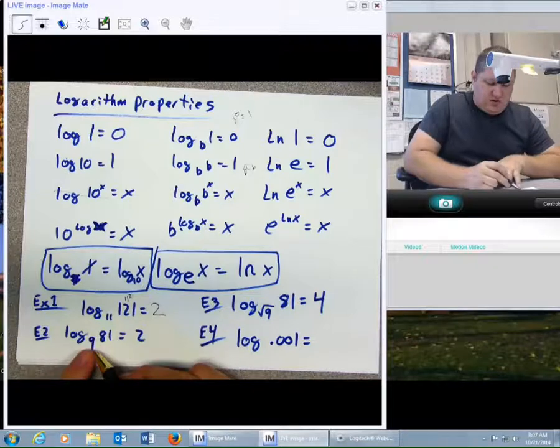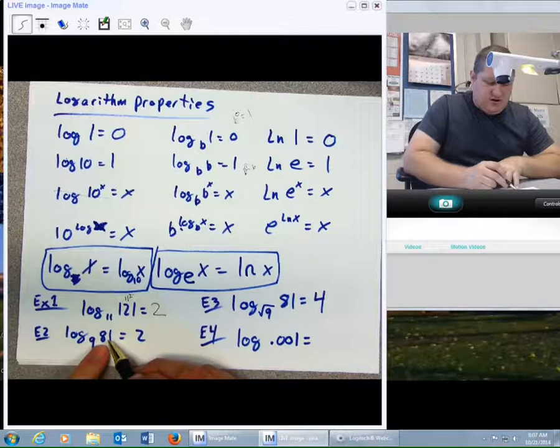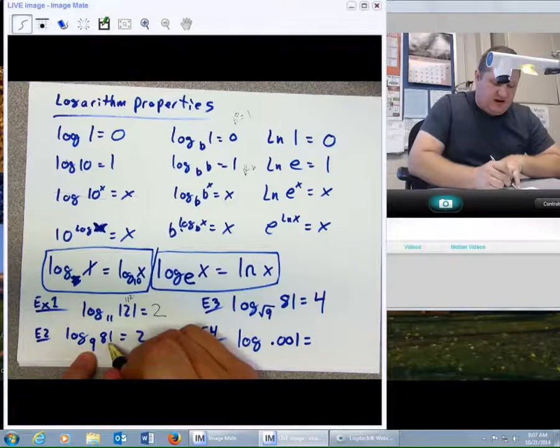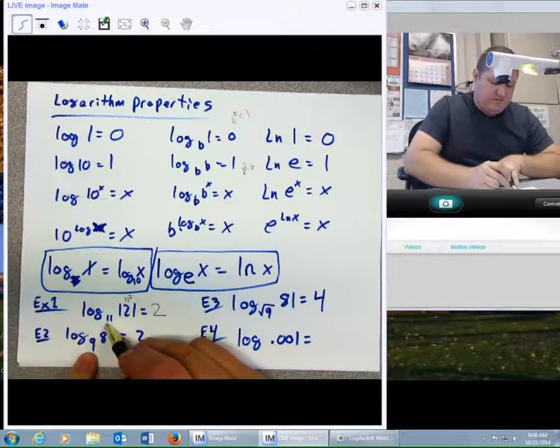In the same way, log base 9 of 81. How many 9s does it take to make 81? 81 is the same as 9 squared, so it takes 2.